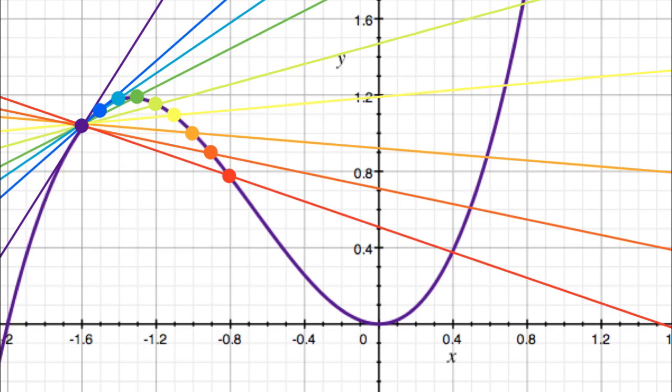Eventually, the distance between the points will become infinitely small until eventually, the two points come together at a single point and the line no longer intersects the function at two points but instead only at one and this is the tangent line to the curve at that point.